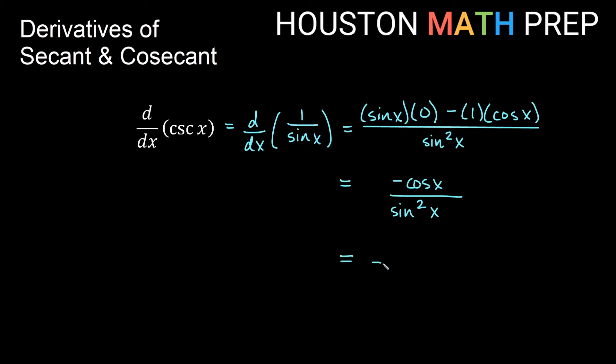Now I'll need a negative out front, so we'll say negative. And I'm going to have one fraction that's over sine x times another thing with a denominator of sine x to give me the sine squared x. And I'll go ahead and break this cosine x up into 1 times cosine x.